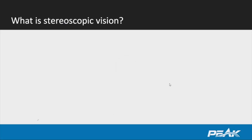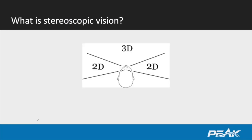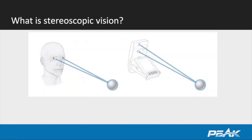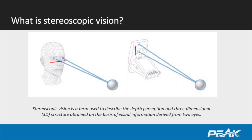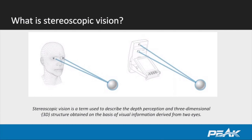I want to do a quick review about Foresight's core technology, and that's stereoscopic vision. Stereoscopic vision is the term used to refer to when you have a single object that is being tracked by two eyes, or in Foresight's case, two cameras — here with the GC2. That technology has since evolved and it now is in the GC Quad and the GC Hawk.